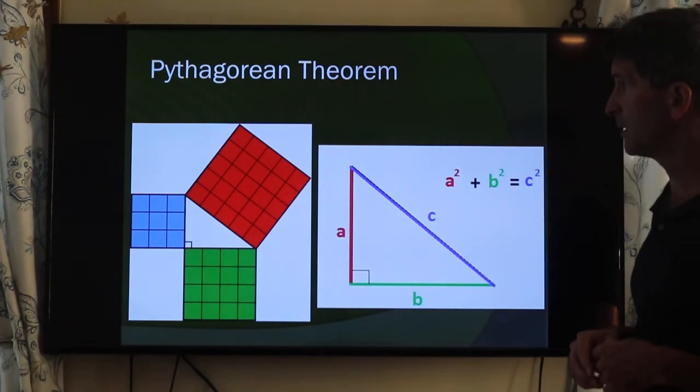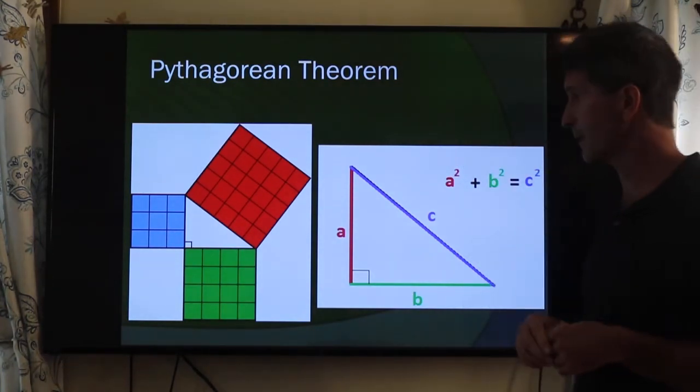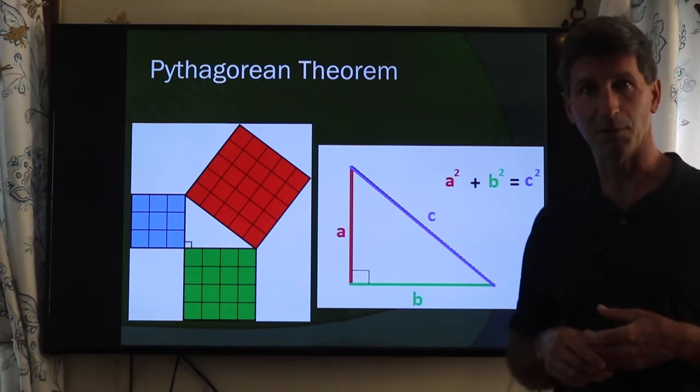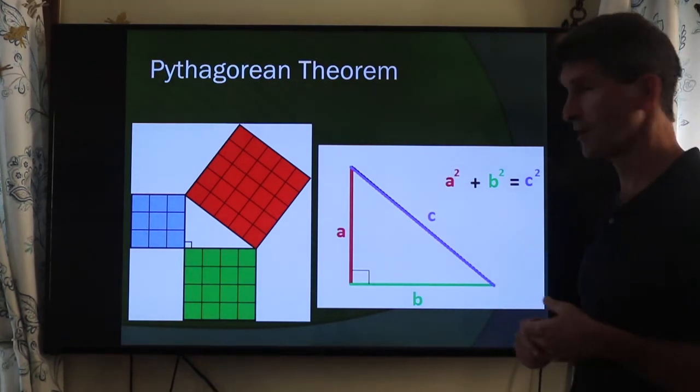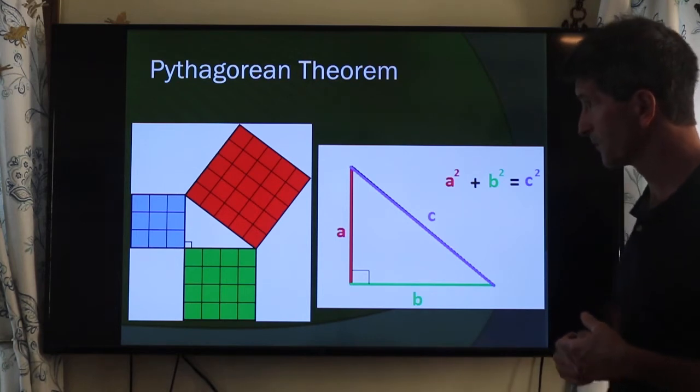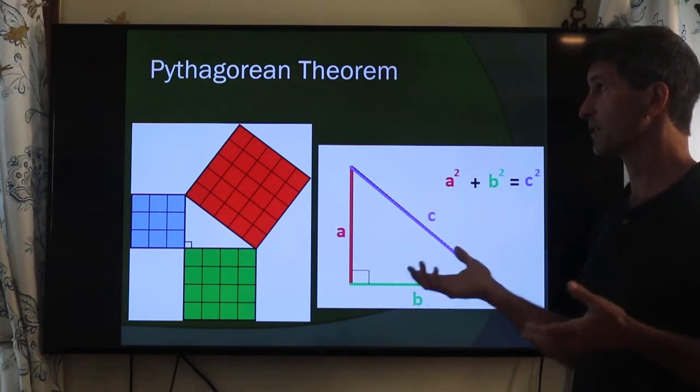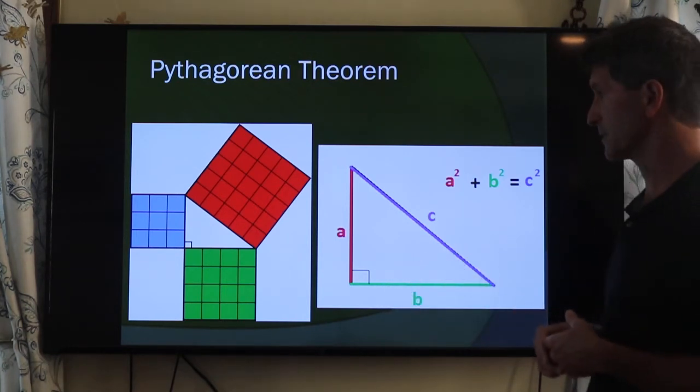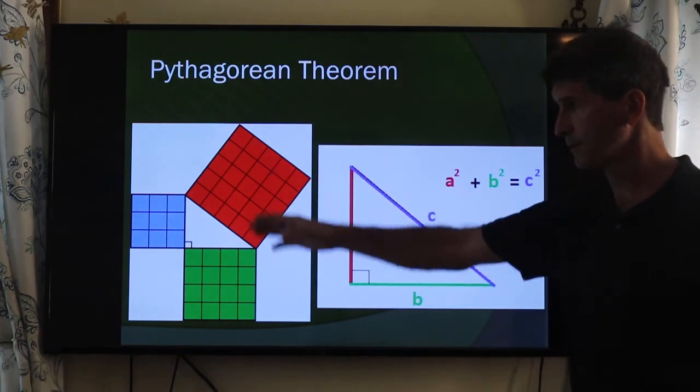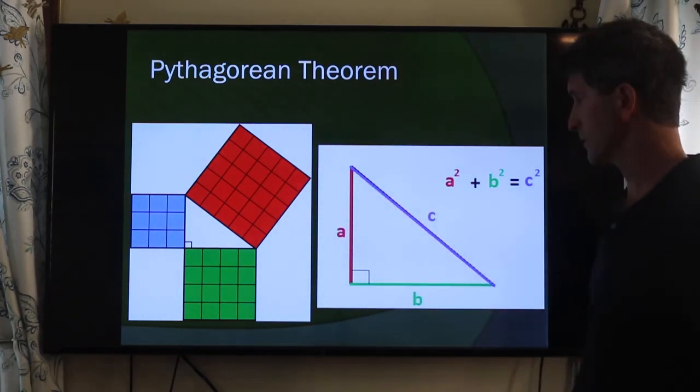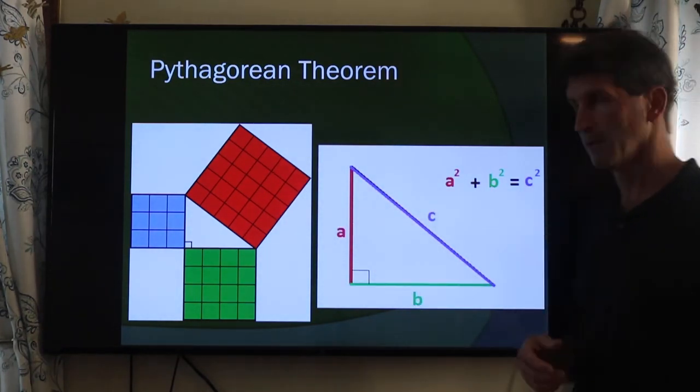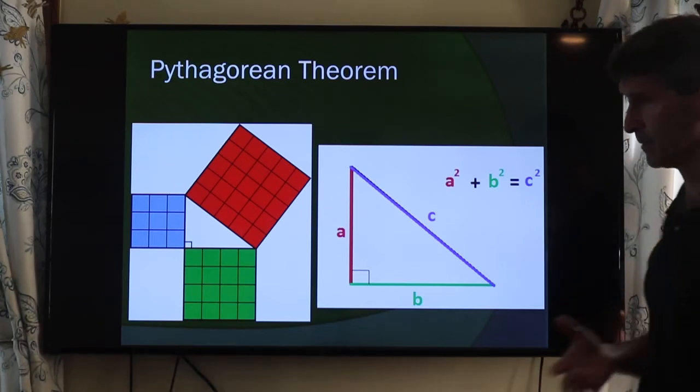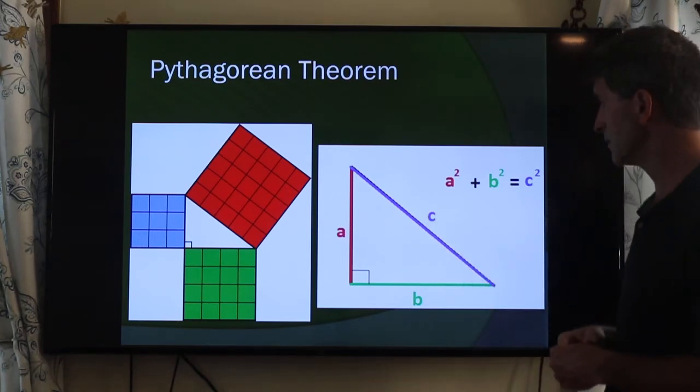You also should know the Pythagorean theorem. I always laugh at this because long before Pythagoras, the Egyptians and Babylonians knew about this. It's called the Pythagorean theorem because supposedly Pythagoras came up with the proof that it was correct. But again, in order to square up the pyramids, the Egyptians actually used this.